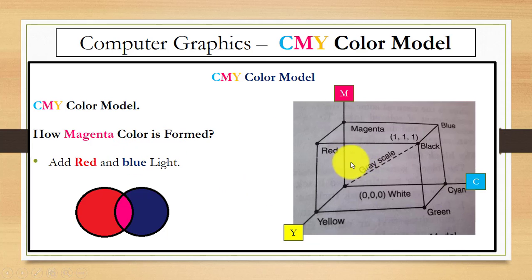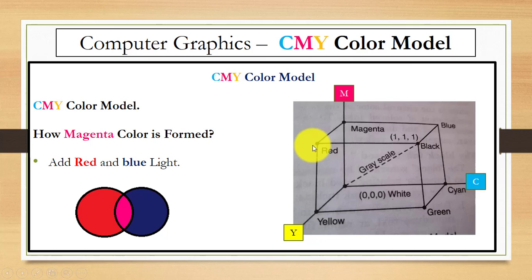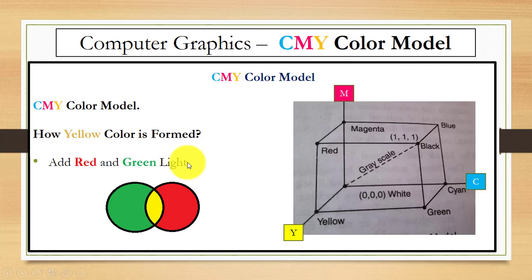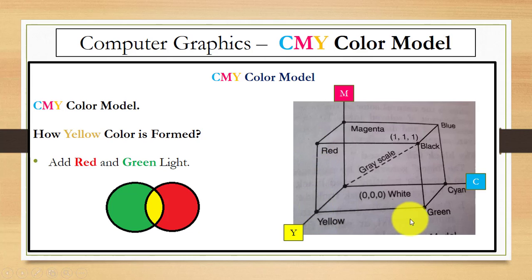How can we form magenta color? For this we add red light and blue light. When you add red light and blue light, you can form magenta color. Next, how can we form yellow color? When you add red light with green light, you can form yellow color.